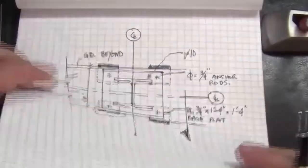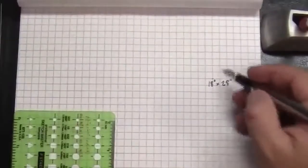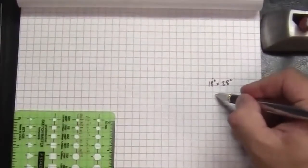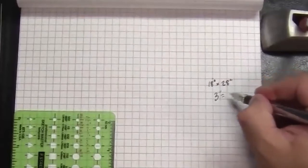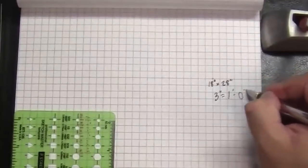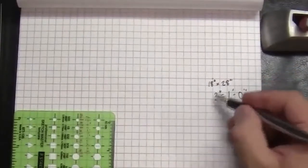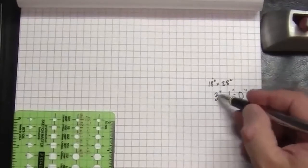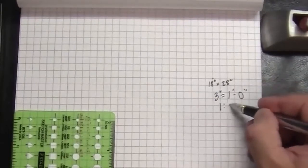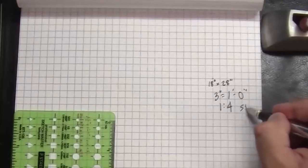And to do that, a key aspect of it is, for this one, that I want to do 3 inches equals a foot. And that will give me a ratio of 1 to 4 for the scale factor.